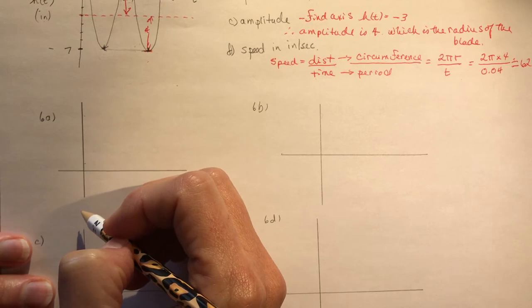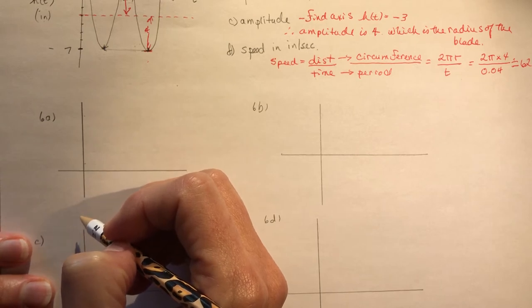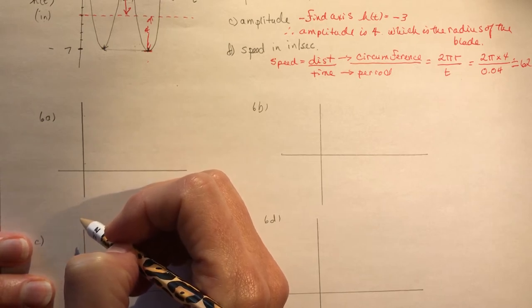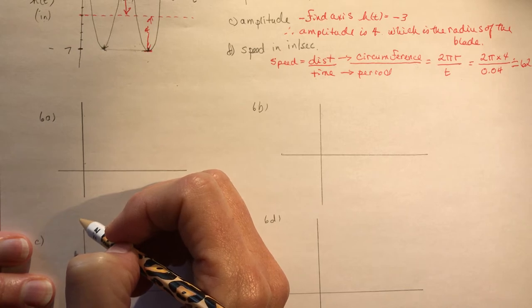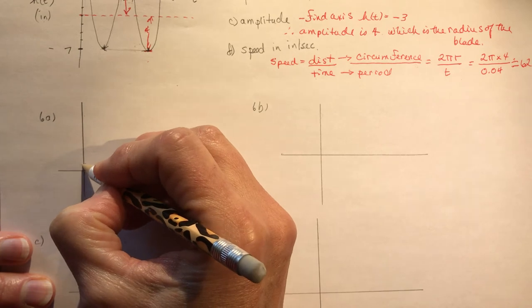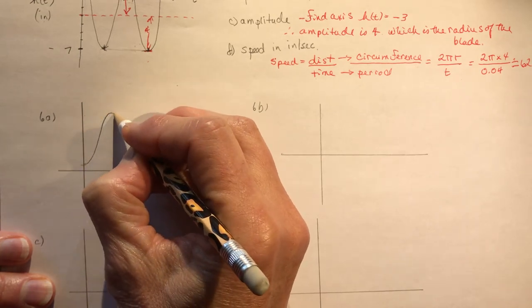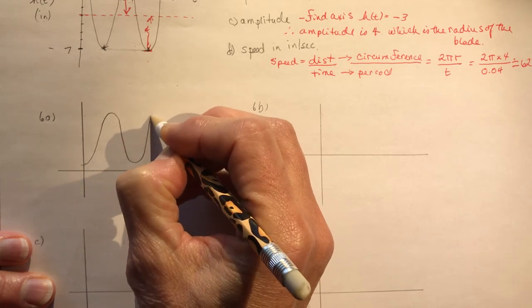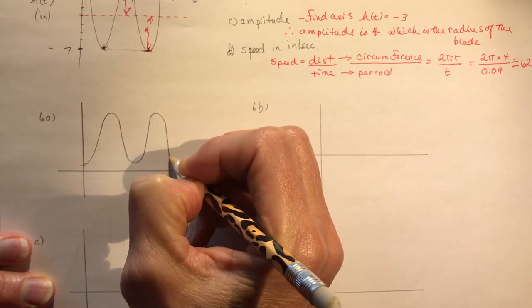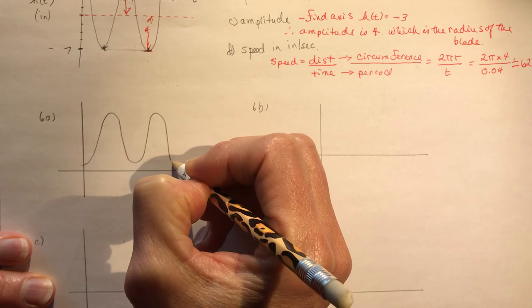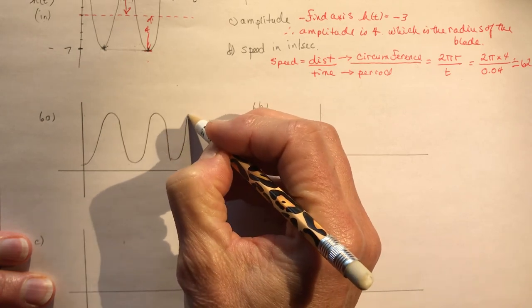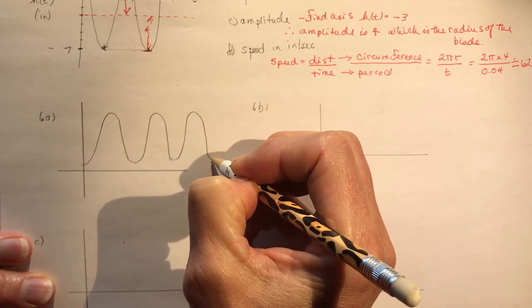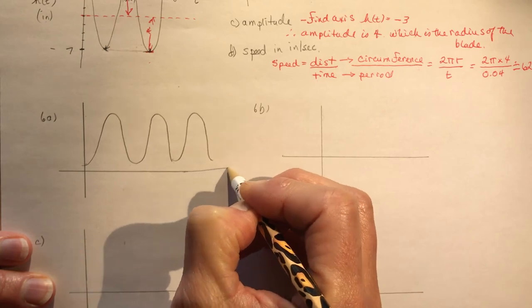So this one says, a Ferris wheel with a radius of seven meters whose axle is eight meters above the ground and rotates once every 40 seconds. So I'm just going to sketch something here. So it's going to look, it's sinusoidal. So it's going to go like this. One, two. So that's one cycle, two cycles. Make sure you learn how to count cycles. There's often tricky questions about that. So there would be three cycles.